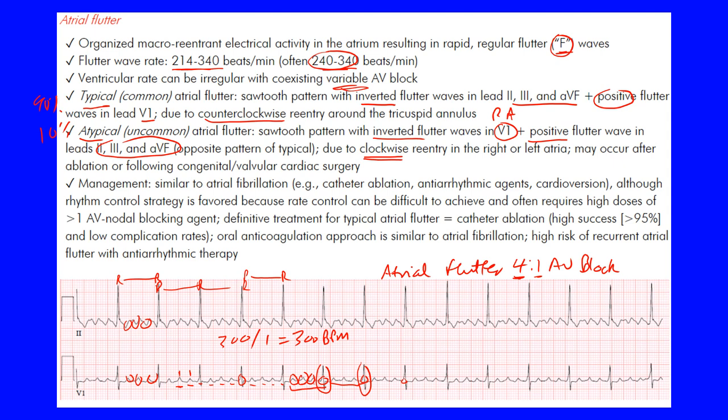The atypical form may occur after catheter ablation — an iatrogenic form — or after congenital or valvular cardiac surgery. Remember, the typical form is counterclockwise and the more common of the two, while the atypical form has a clockwise circuit and is less common.